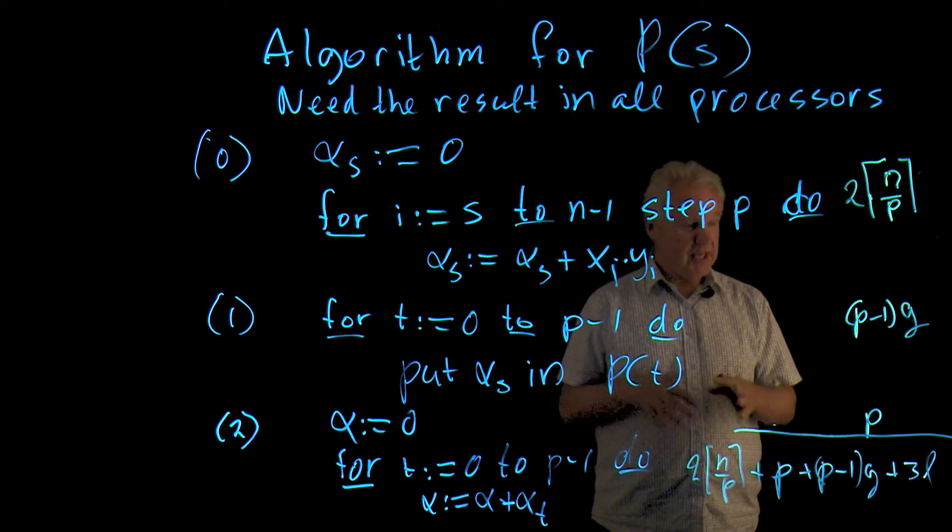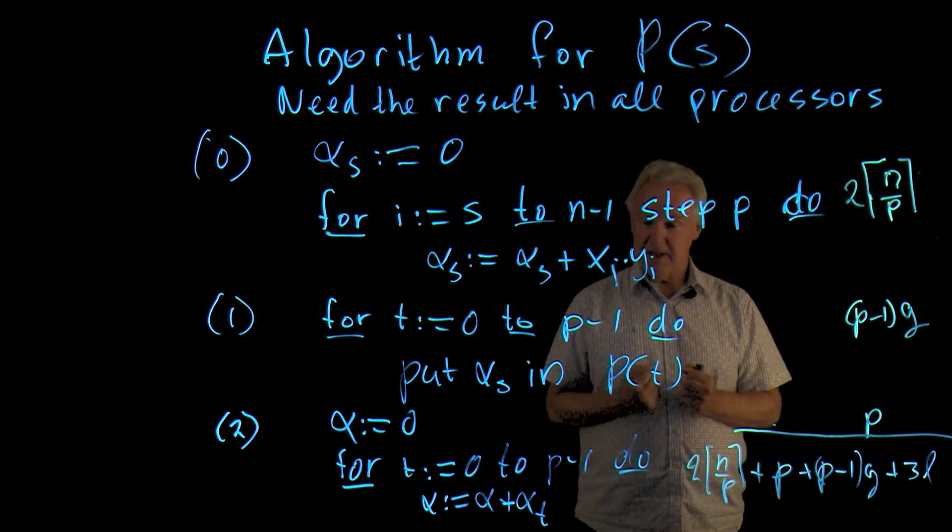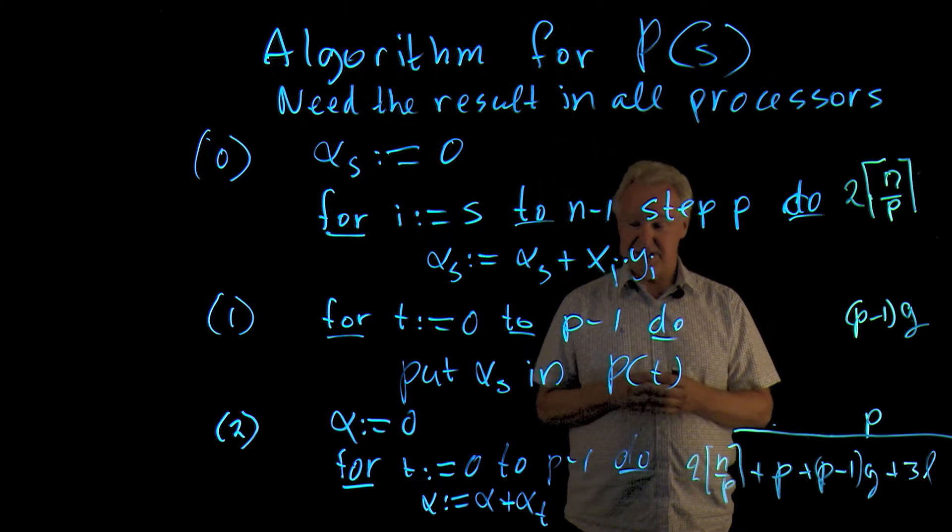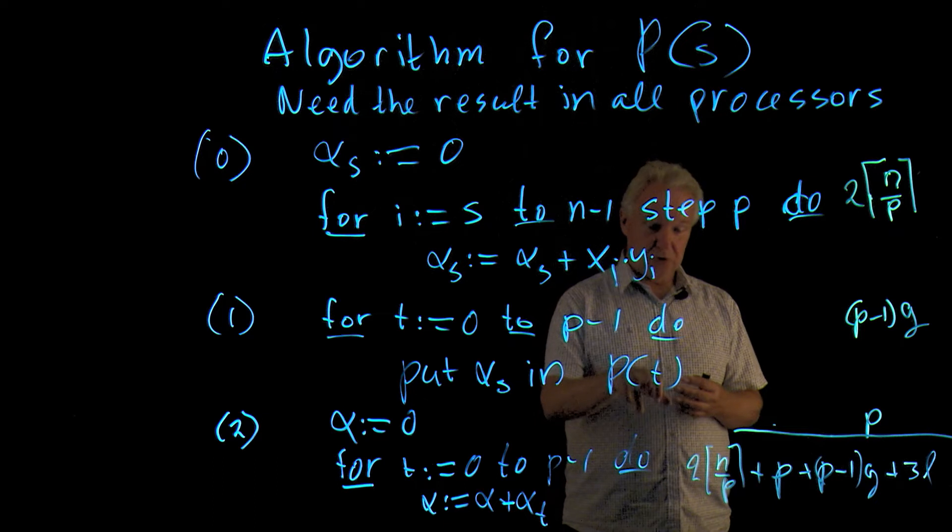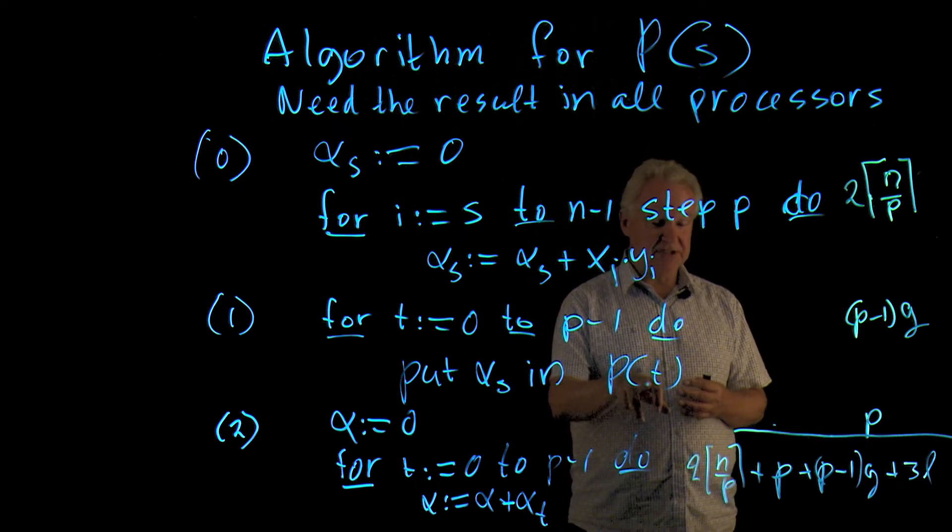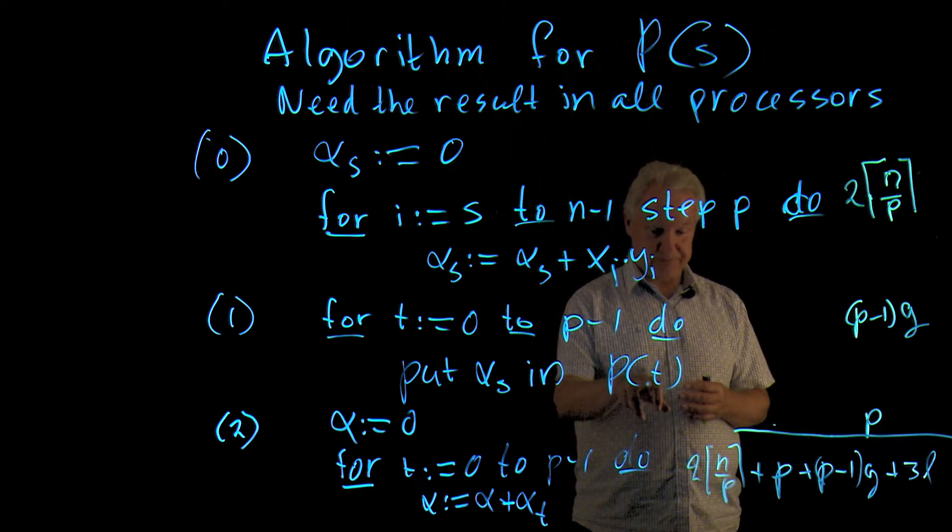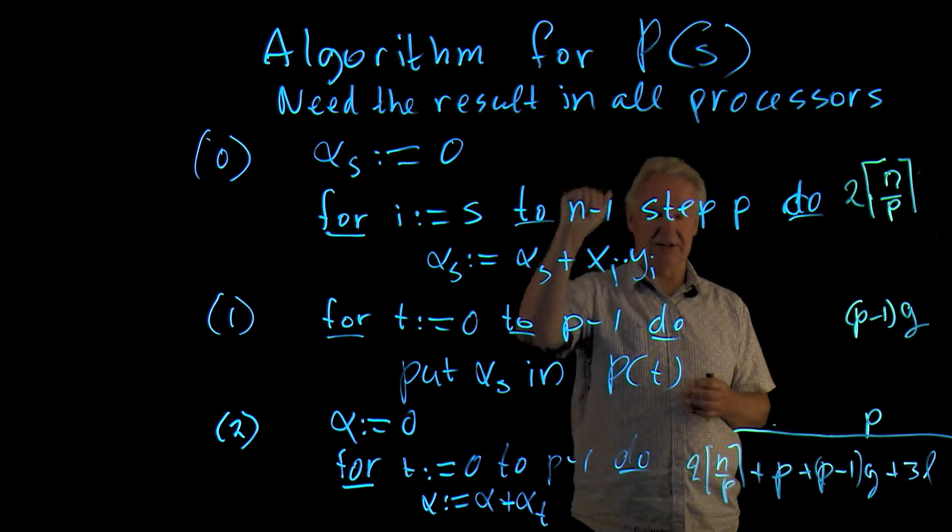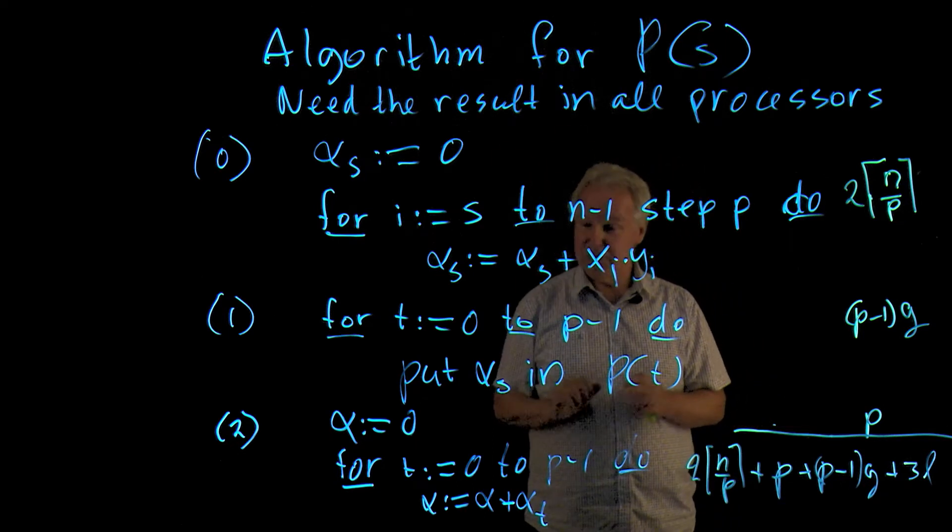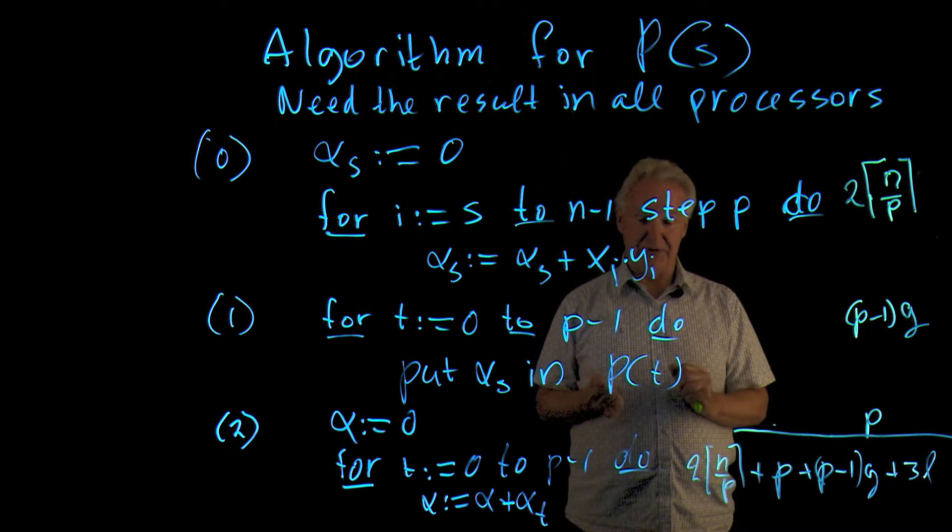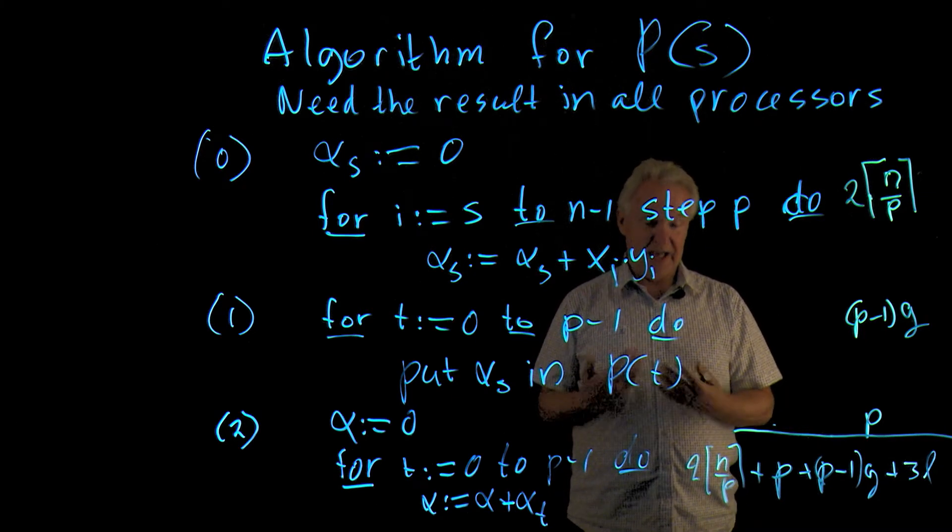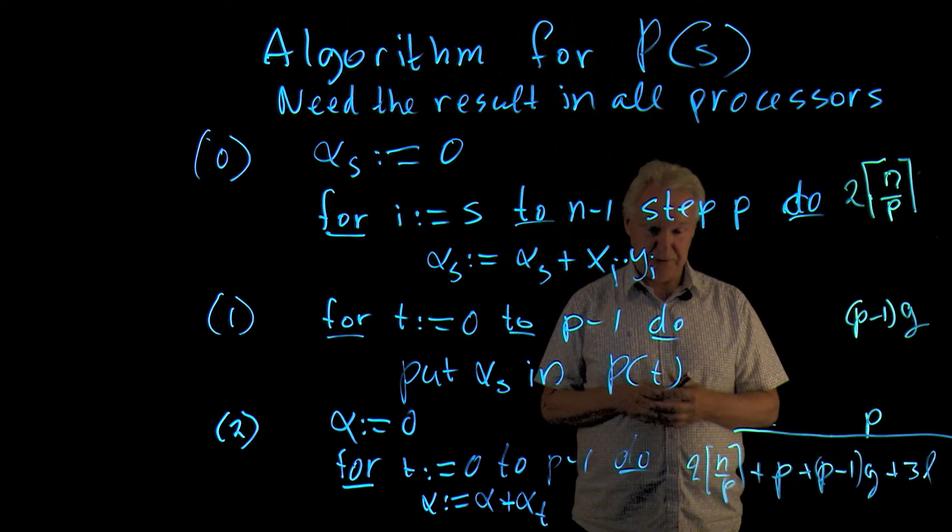So we have here the computation time, note the extra p that we have for adding all the partial results, communication time, and synchronization time. And now my question to you is, assume that we, instead of sending my data to all the processors, I only send it to processor zero, but we still demand that the result becomes available on every processor, what would then be the cost of the algorithm if we did it that way? And what adjustments do we have to make?